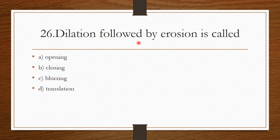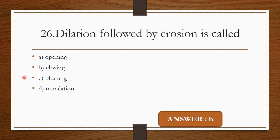Question 25: Dilation followed by erosion is called — Option A: Opening. Option B: Closing. Option C: Blurring. Option D: Translation. The correct answer is Option B — Closing.